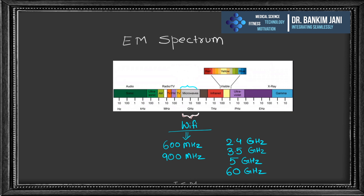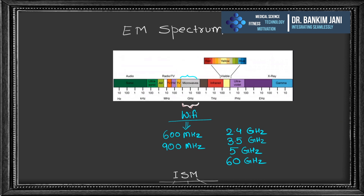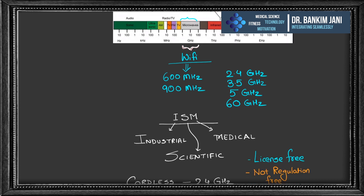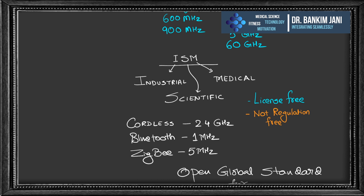In the microwave section, we have 60 GHz, 5 GHz, 3.5 GHz, 2.4 GHz, 600 MHz, 900 MHz — these are the various frequencies in use. The ISM band (Industrial, Scientific and Medical) is a band available for communication — license-free but not regulation-free, controlled by a governing body.